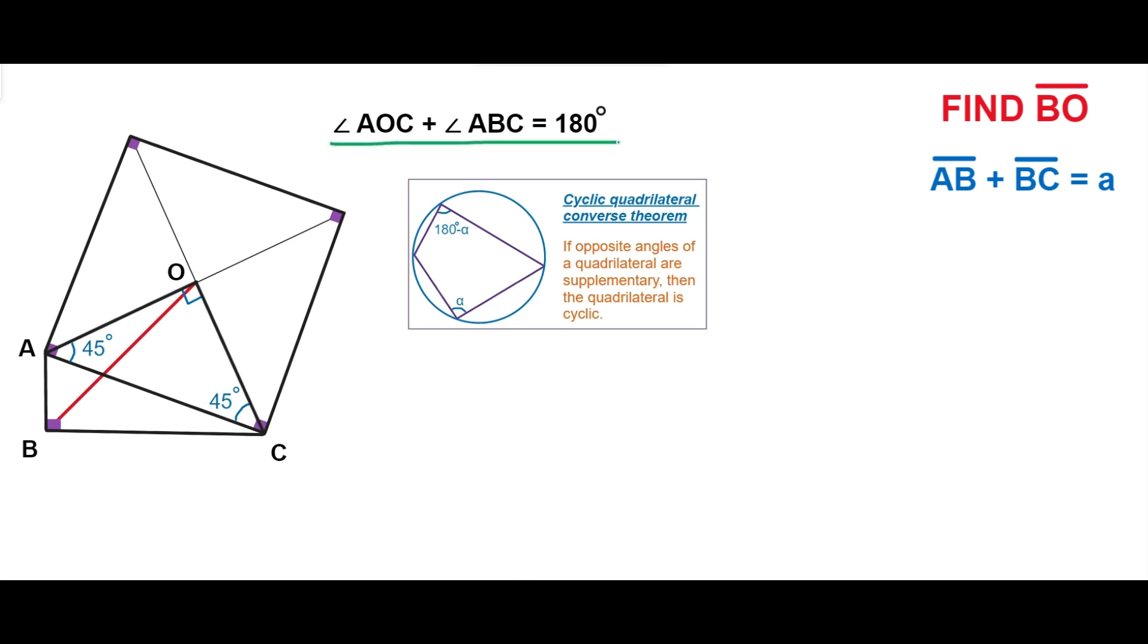Therefore, the quadrilateral BAOC is cyclic, which means there is a circle that passes through all the points B, A, O, C.